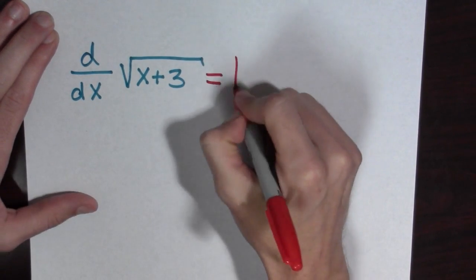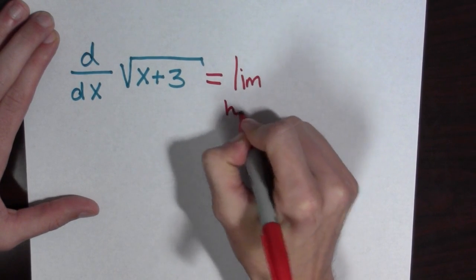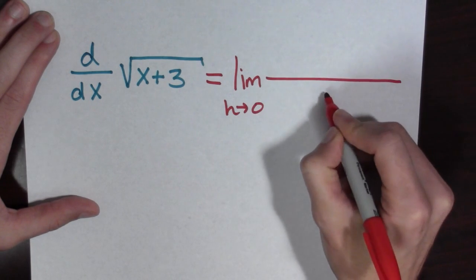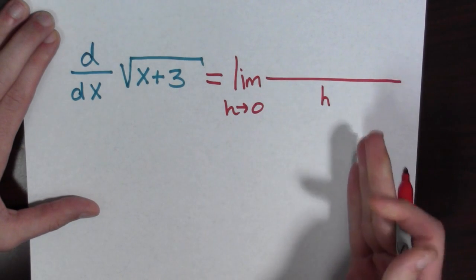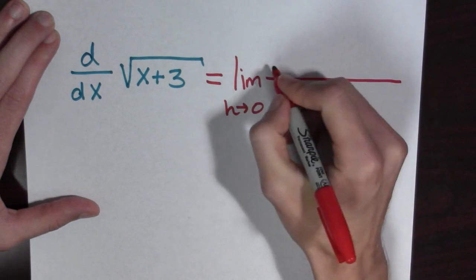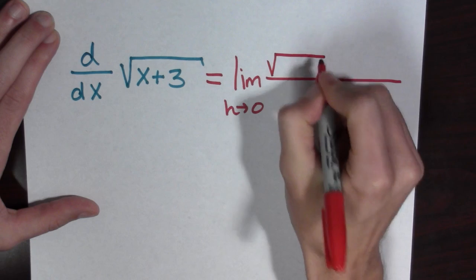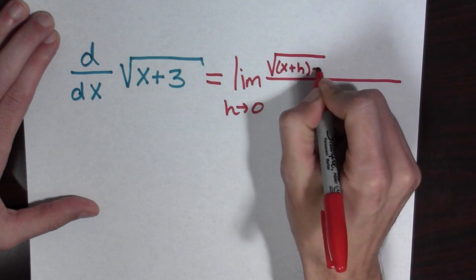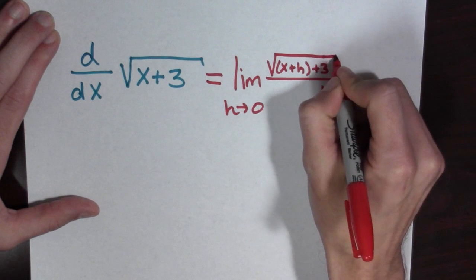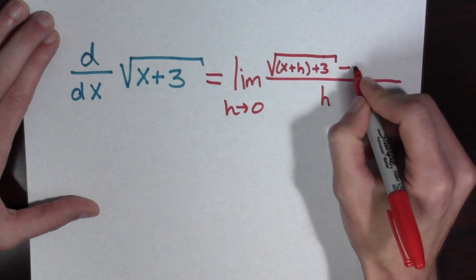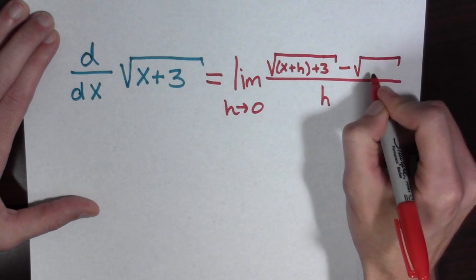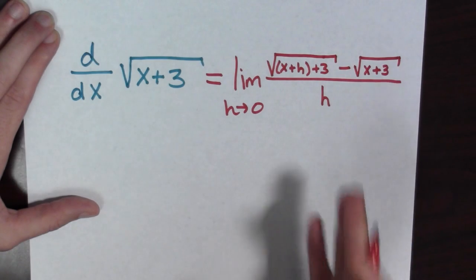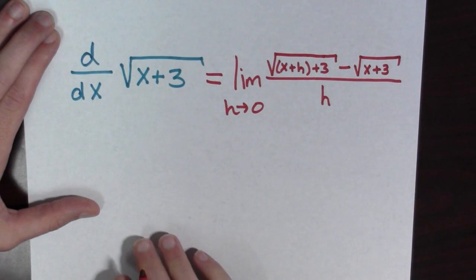This is equal to the limit as h goes to 0 of a bunch of stuff all over h. It's going to be the square root of x plus h plus 3, minus the square root of x plus 3. This comes from the limit definition of the derivative.